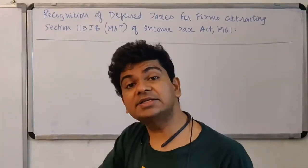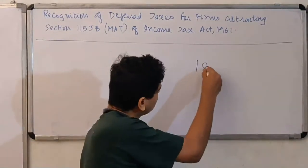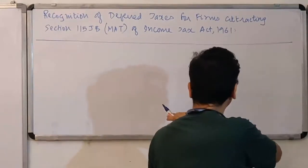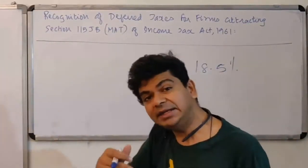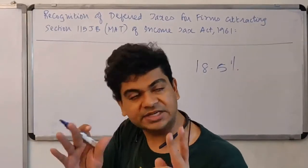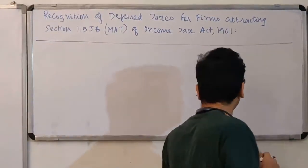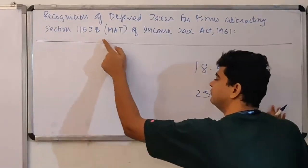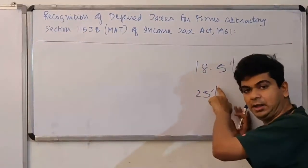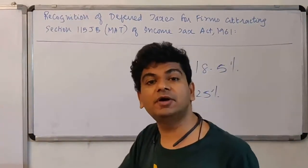Now see, under Section 115JB the special tax rate mentioned is 18.5%. And let us say the regular rate at which a company or an entity is required to pay tax, let's say it is turning out to be 25%. So let's say the regular tax rate is 25% while the special rate of 115JB is 18.5%. At what tax rate should I determine deferred taxes?